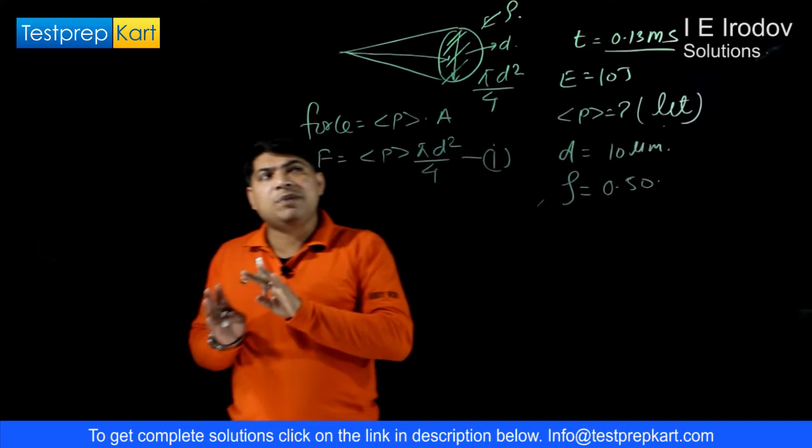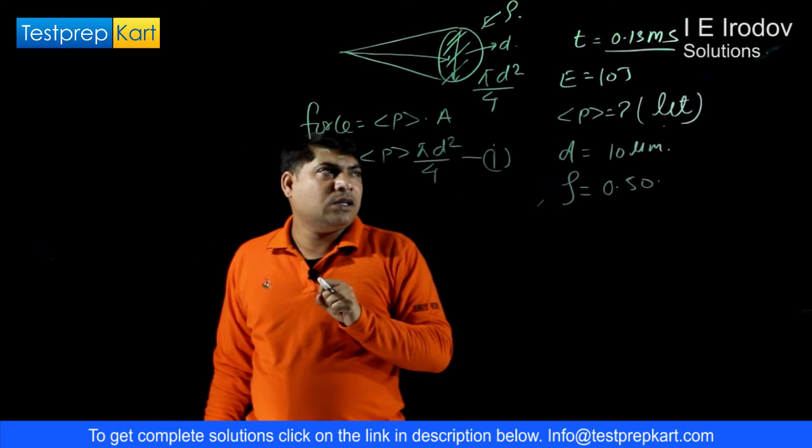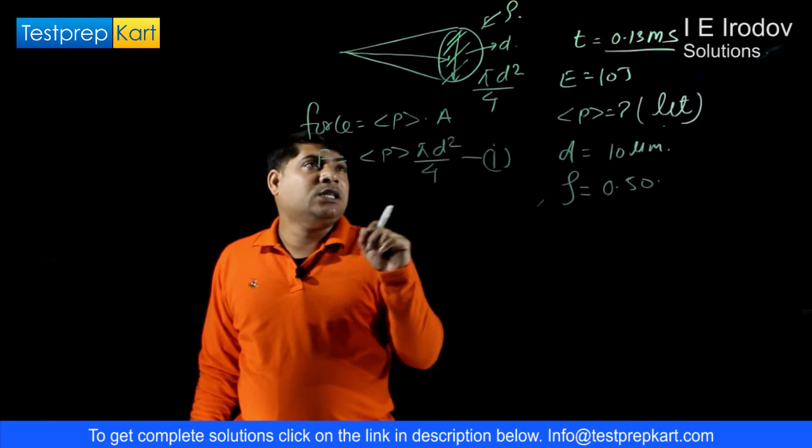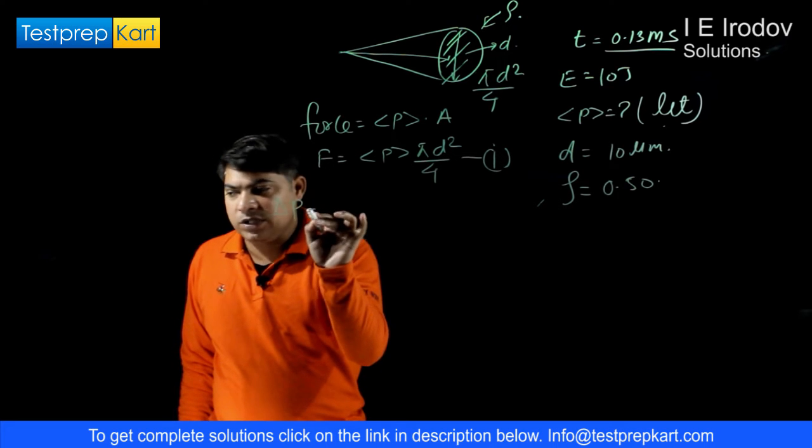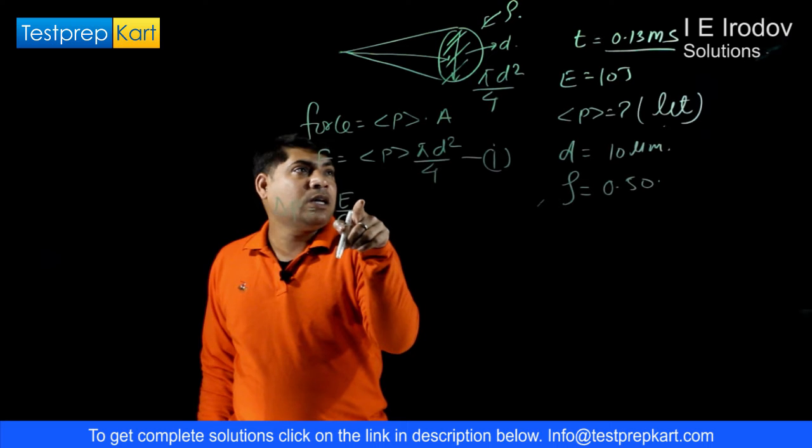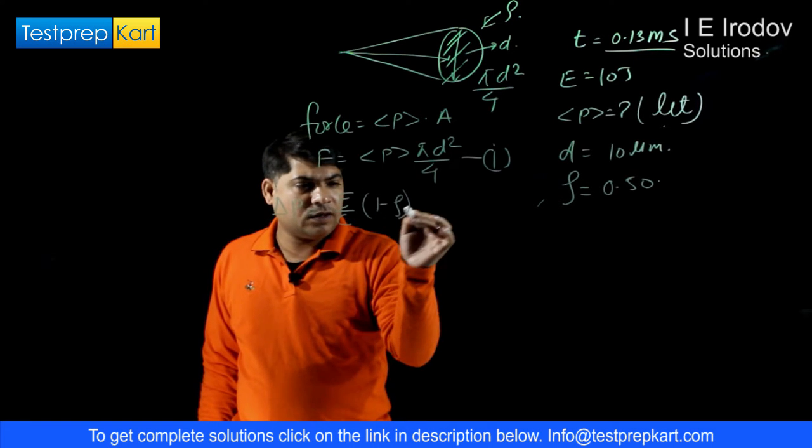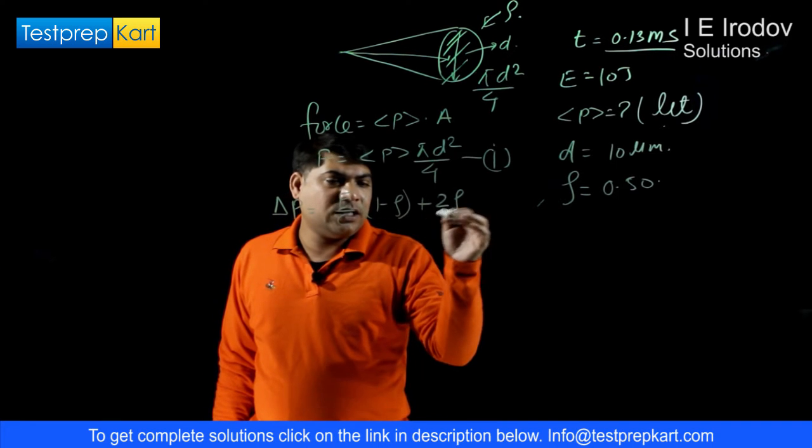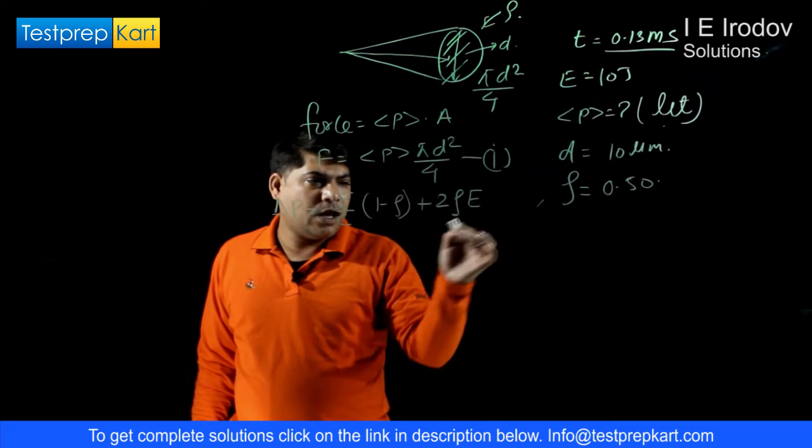Now when this laser beam is falling then some reflection would be taking place. Due to that there will be change in momentum. So change in momentum due to reflection is E over C where E is energy and C is speed of light into 1 minus rho, plus twice the reflected part 2 rho into E upon C.